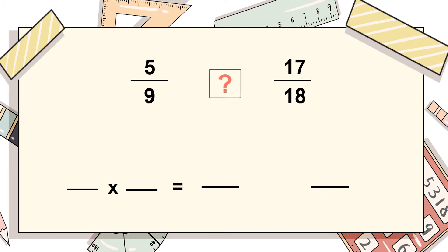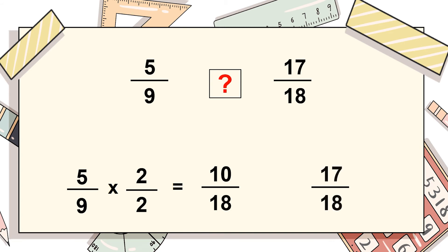Let's see another example with the same scenario: 5/9 and 17/18. Here, 9 is a factor of 18, so we find the number that multiplied by 9 equals 18, which is 2. We multiply the fraction 5/9 by 2/2: the new denominator is 18 and the new numerator is 5 × 2 = 10, giving us 10/18. Comparing 10/18 with 17/18, we see 17 is larger. Hence 17/18 is the bigger fraction and the alligator sign opens towards the right.